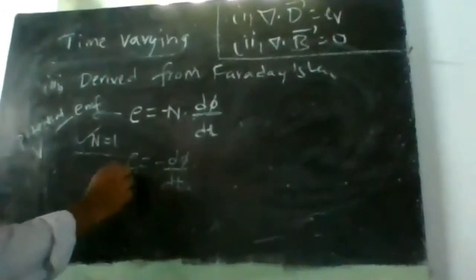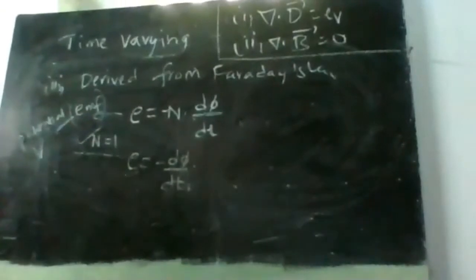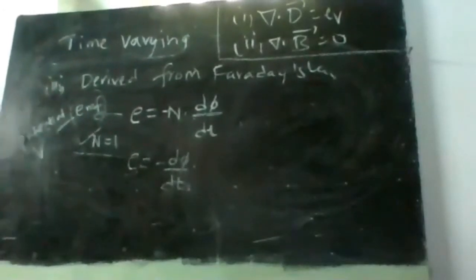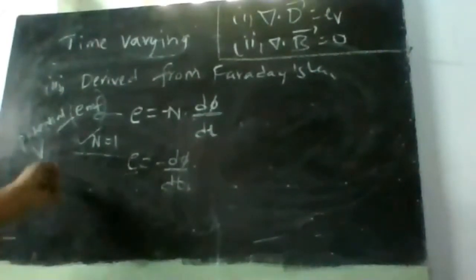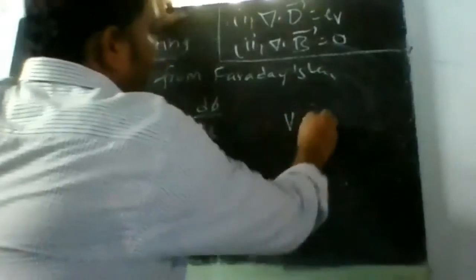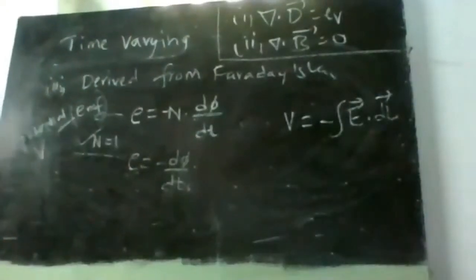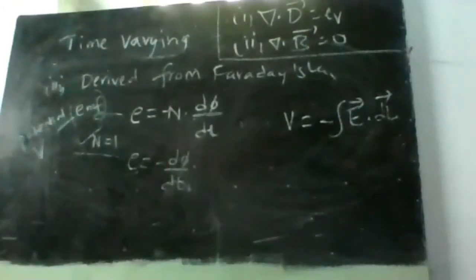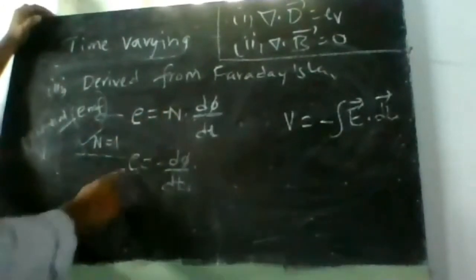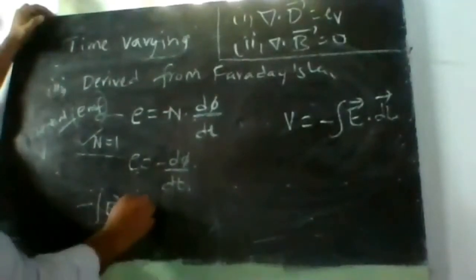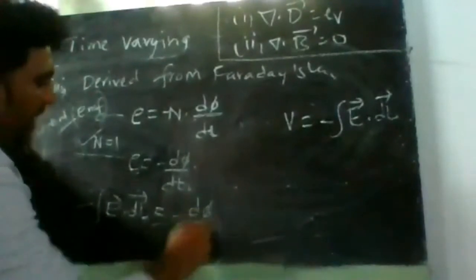What is E here? E is basically EMF. As per Faraday, EMF is nothing but potential. We know that potential can be given as V = −∫Ē·dl̄. Substituting that, E equals V, so we can write ∮Ē·dl̄ = −dφ/dt.